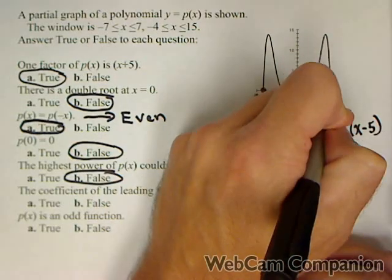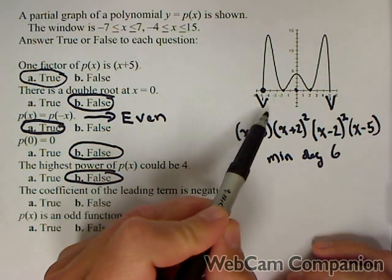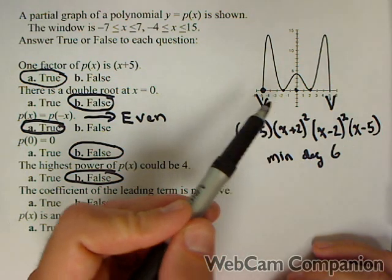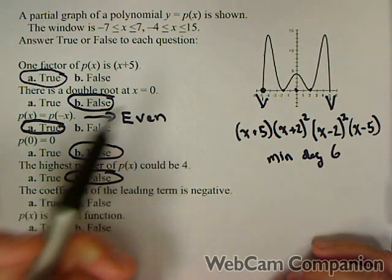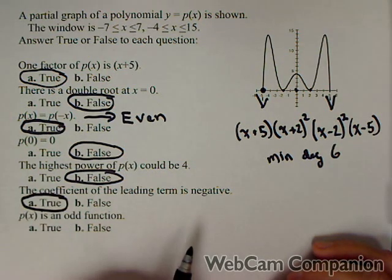Now they both go down as far as their end behavior. That means we must have a negative lead coefficient, because otherwise they would both go up if we had an even degree and it was positive. So the coefficient of the leading term must be negative, because they both go down.